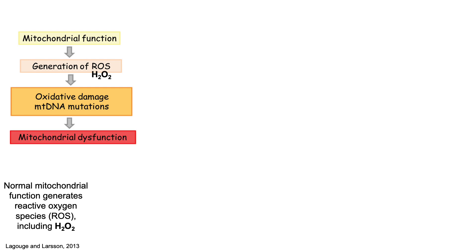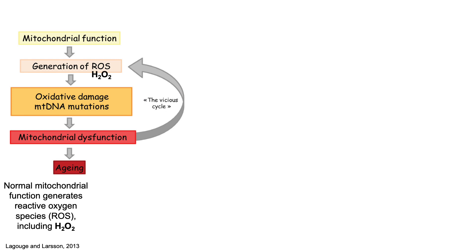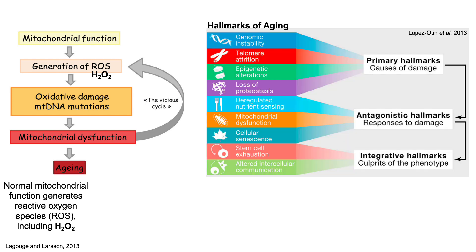Unfortunately, mitochondrial dysfunction then imposes a vicious cycle on this process, leading to the generation of more ROS, more damage and mutations, and further decreased mitochondrial function. The sum of this process contributes to aging, and to highlight this, mitochondrial dysfunction is one of the nine hallmarks of aging.